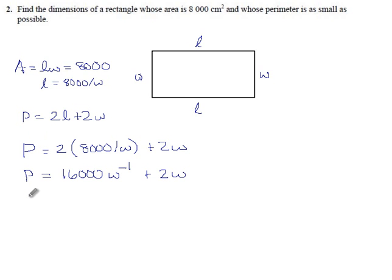And yeah, we can do that derivative. dP/dW is minus 16,000 W to the minus 2 plus 1 times 2W to the 0. And if we want to know where this minimizes, where it bottoms out, we want to know where its derivative equals zero.